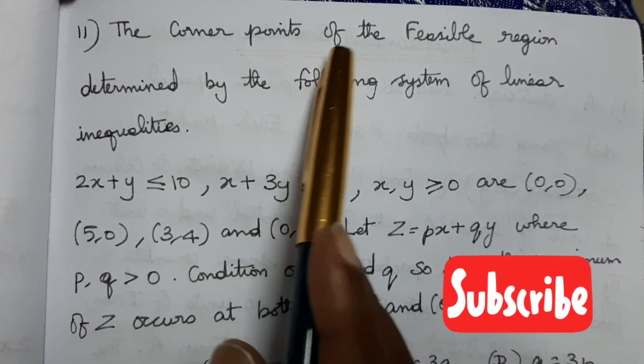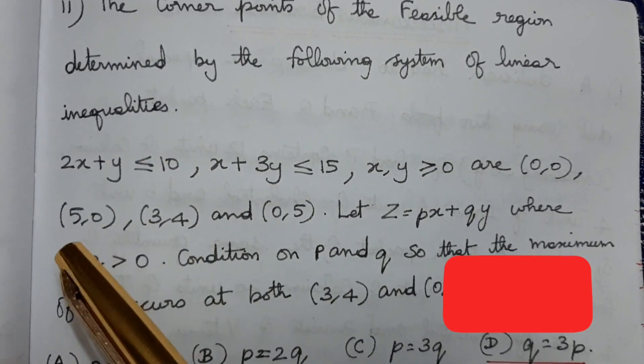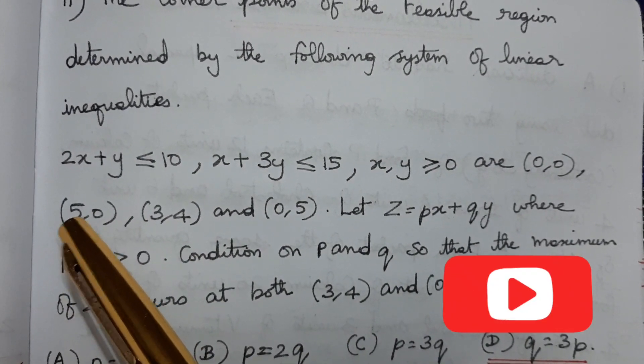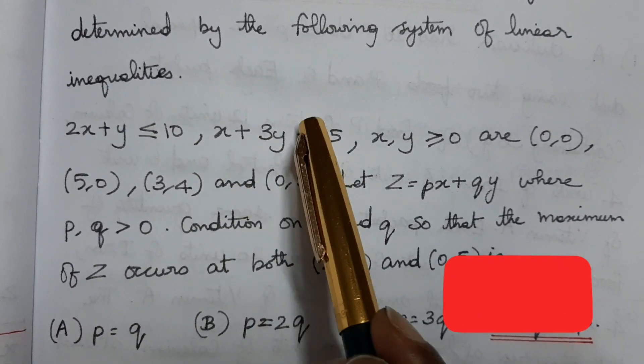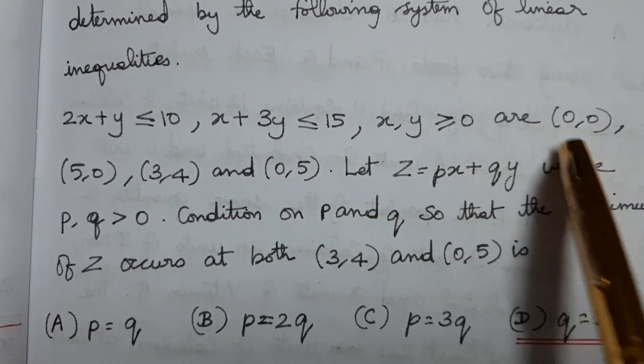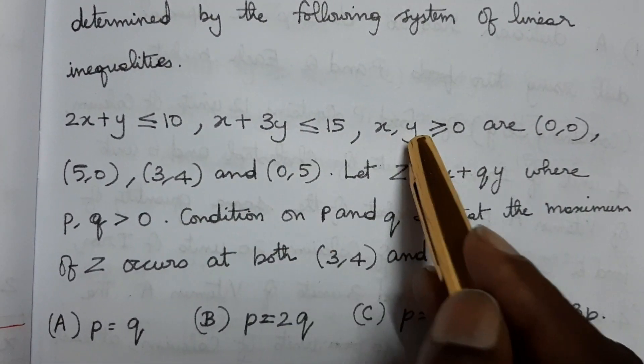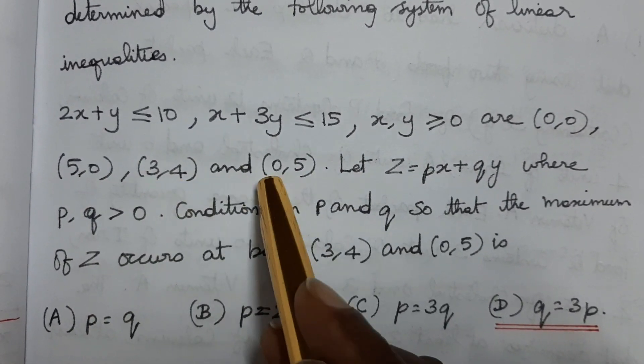The corner points of the feasible region are determined by the following system of linear equalities. In the subject condition: 2x plus y less than or equal to 10, x plus 3y less than or equal to 15, x, y greater than or equal to 0. The corner points are 0, 0, 5, 0, 3, 4 and 0, 5.